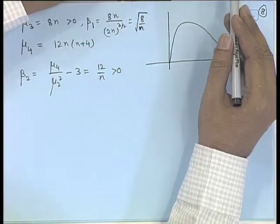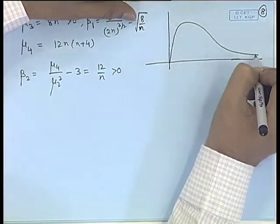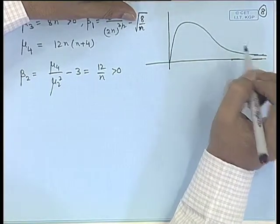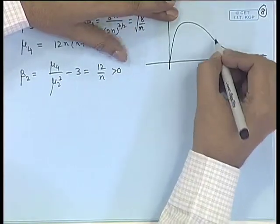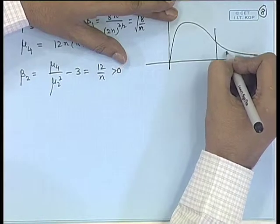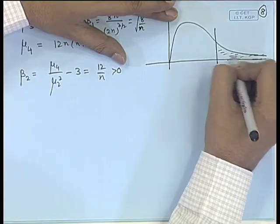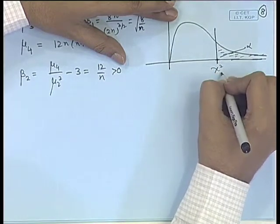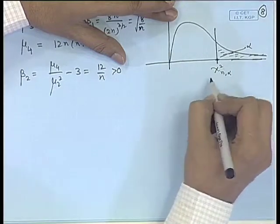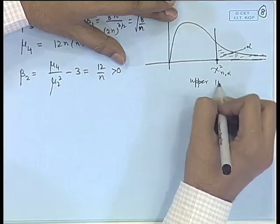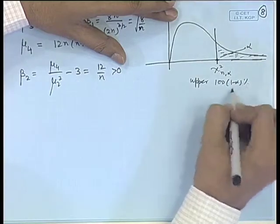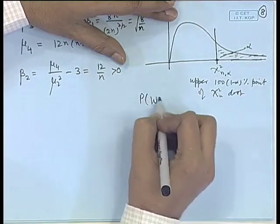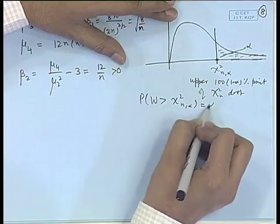Depending on different values of n, the shape will be different, and since it is a special case of gamma distribution, tables of gamma distribution can be used to determine probabilities. However, tables of chi-square distribution are available for specific probabilities. If this probability is α, then the point on the axis is called χ²_{n,α}, the upper 100α percent point of the chi-square(n) distribution, meaning P(W > χ²_{n,α}) = α.